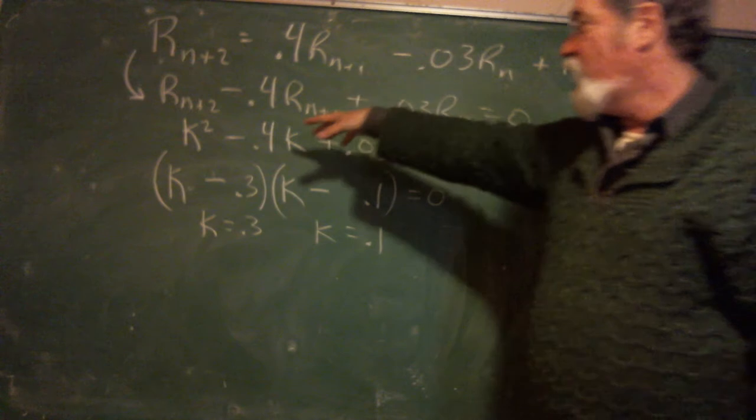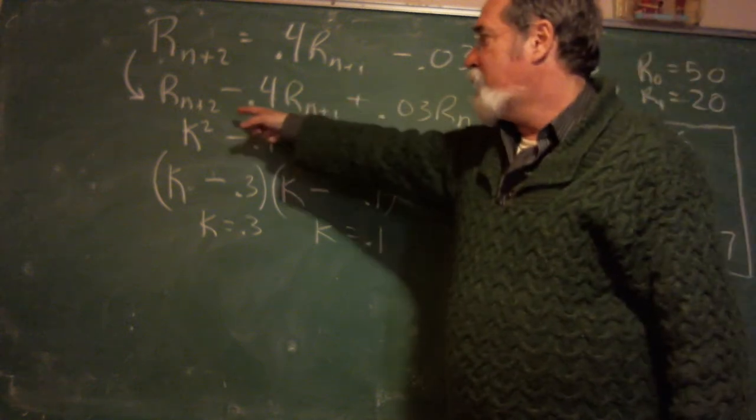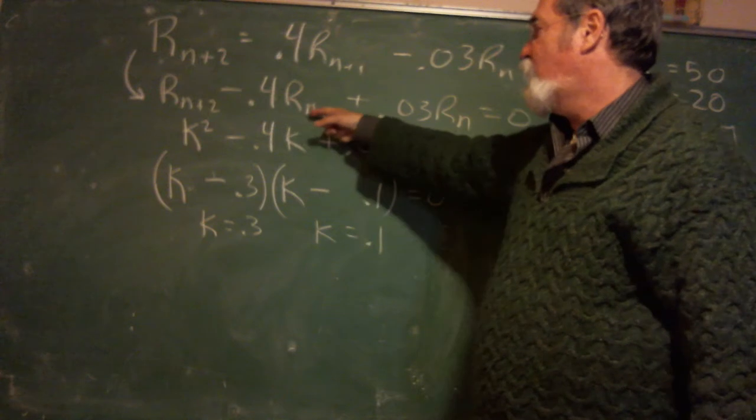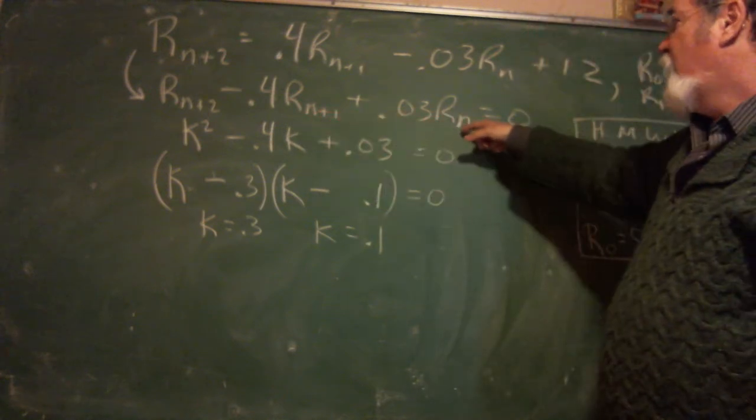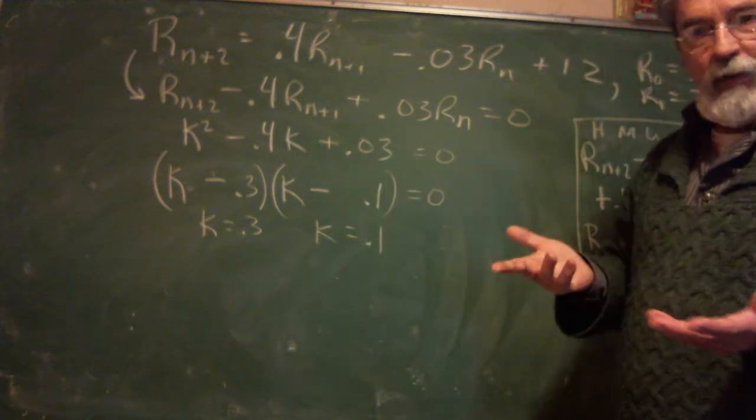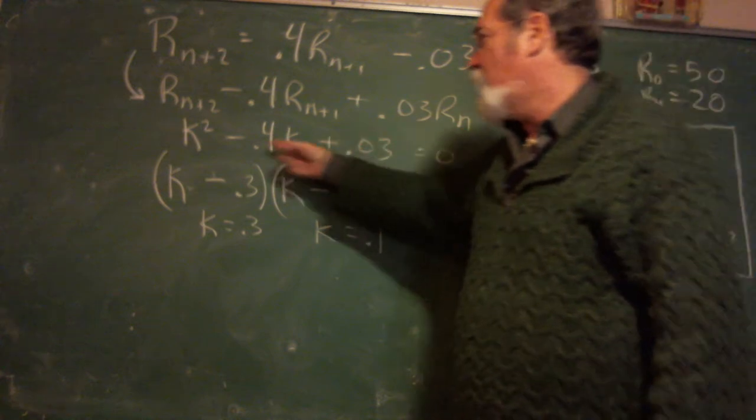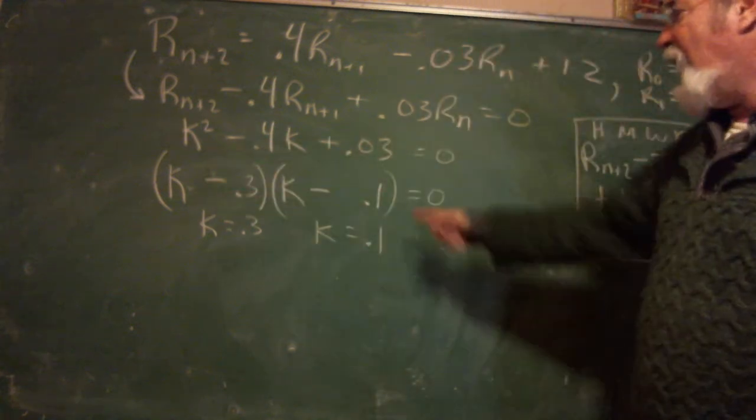So pretend the 12 wasn't there. Bring everything over to this side. And now I have r sub n plus 2 minus 0.4 r sub n plus 1 plus 0.03 r sub n. And just pretend that r sub n is k to a power. So this is k to the zero power, k to the first power, k to the second power. And it factors.